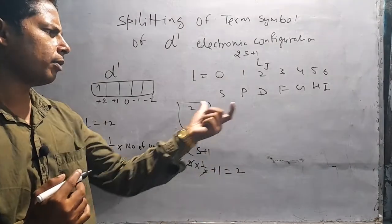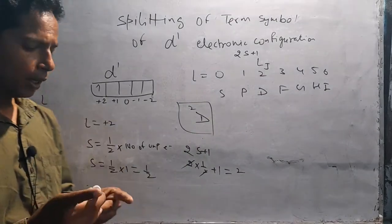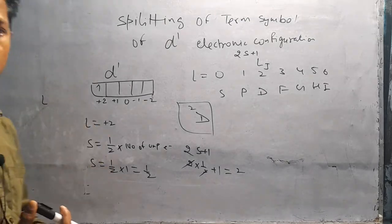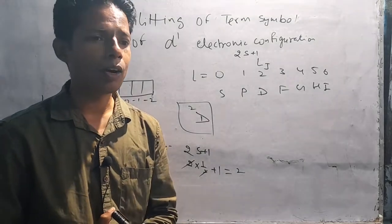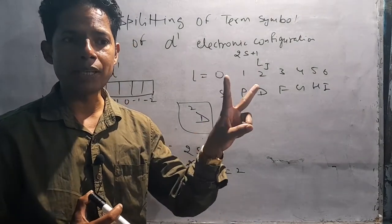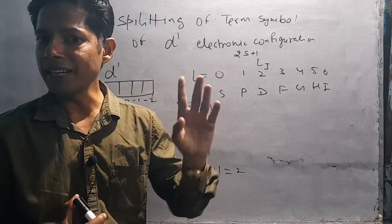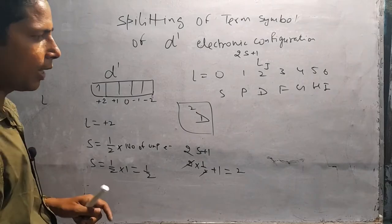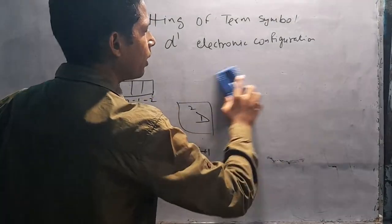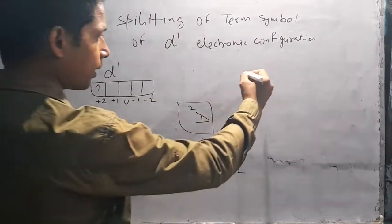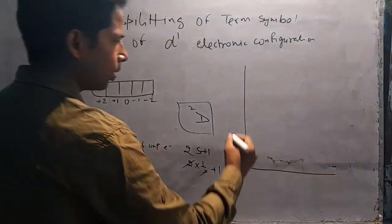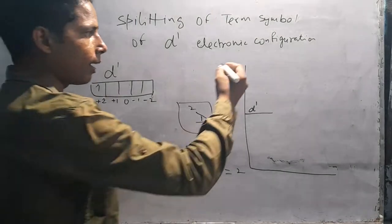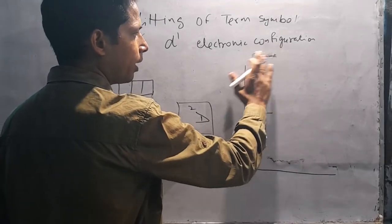अब हमारे पास term symbol 2D निकल के आया। जैसे CFT में हमने पढ़ा था कि D orbitals दो parts में split होते हैं, उसी तरह इस 2D term symbol को भी split करके दिखाना है और energy level diagram भी बनाना है। यहाँ D1 लिखा है जो D1 configuration से निकाला है। पहले octahedral field में देखते हैं।